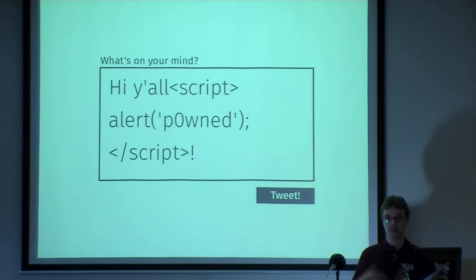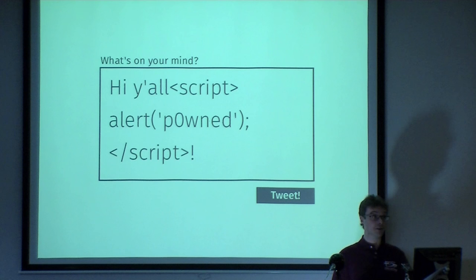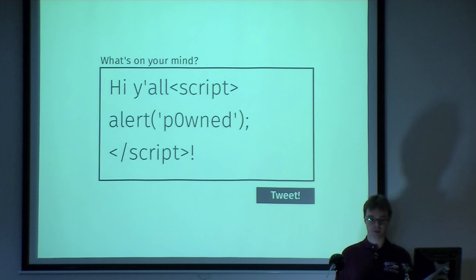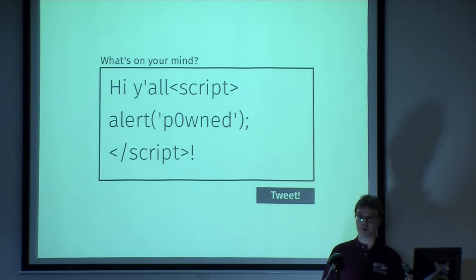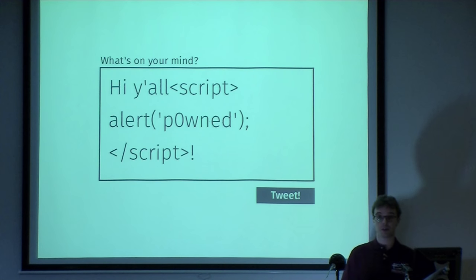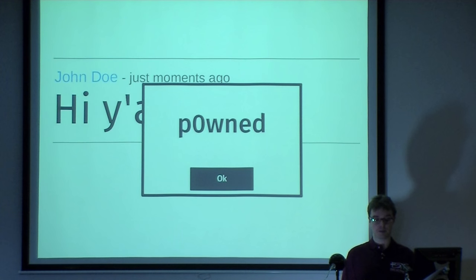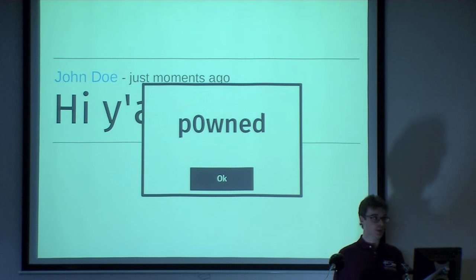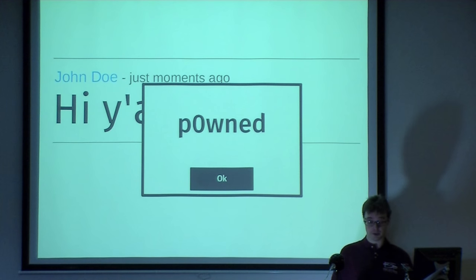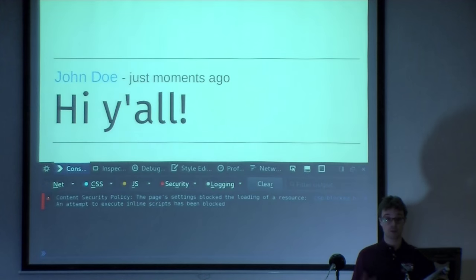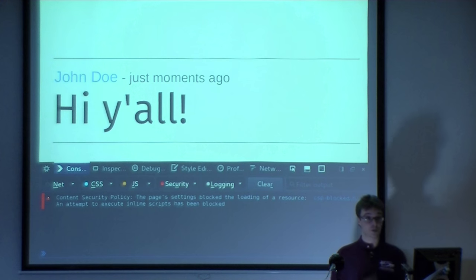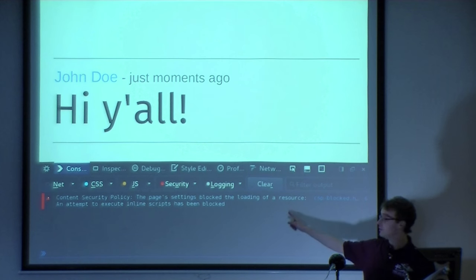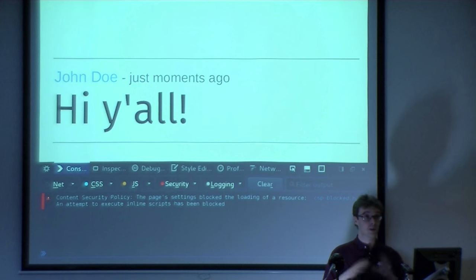Say you write a website that allows users to inject content that you display to other people. What if someone were to type a message and stick in a script tag? Obviously if you write a web application you want to do server-side filtering to get rid of that script tag, but what if you forget or have a flaw? Without CSP the script tag ends up on the page, gets downloaded and executed in the context of your page. With CSP, the message is still there, the script tag is still in the HTML, but as you can see in the developer tools, CSP blocks it — it's not allowed to run. This is enforced by the browser.